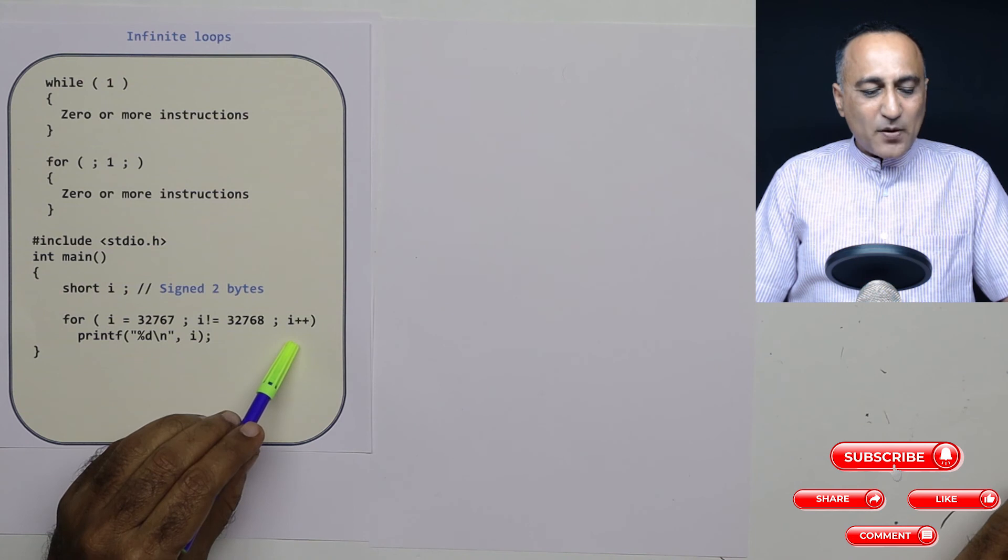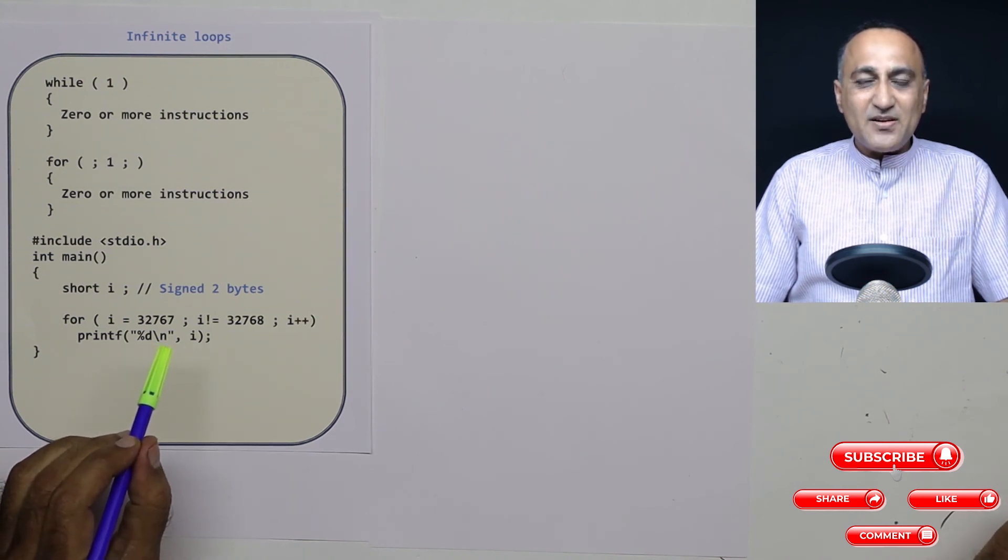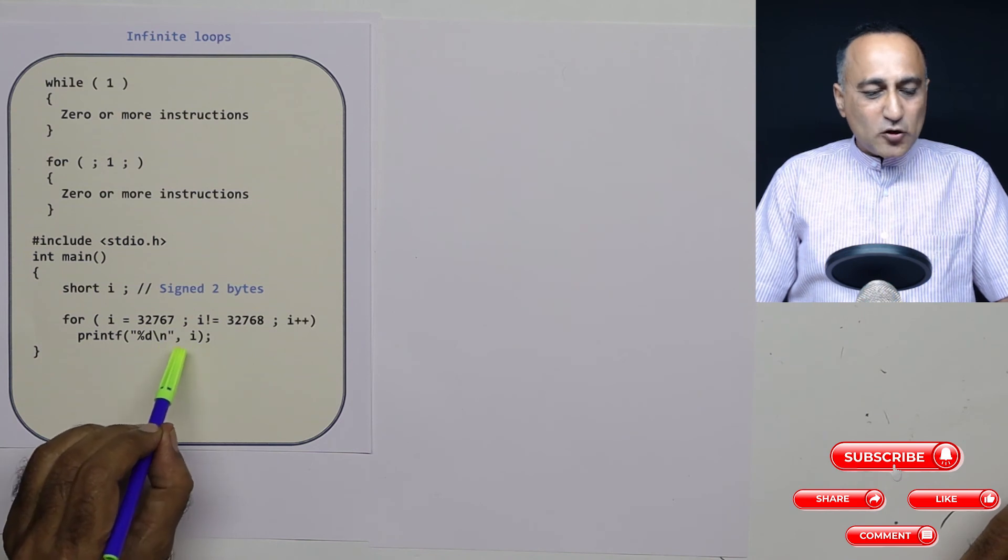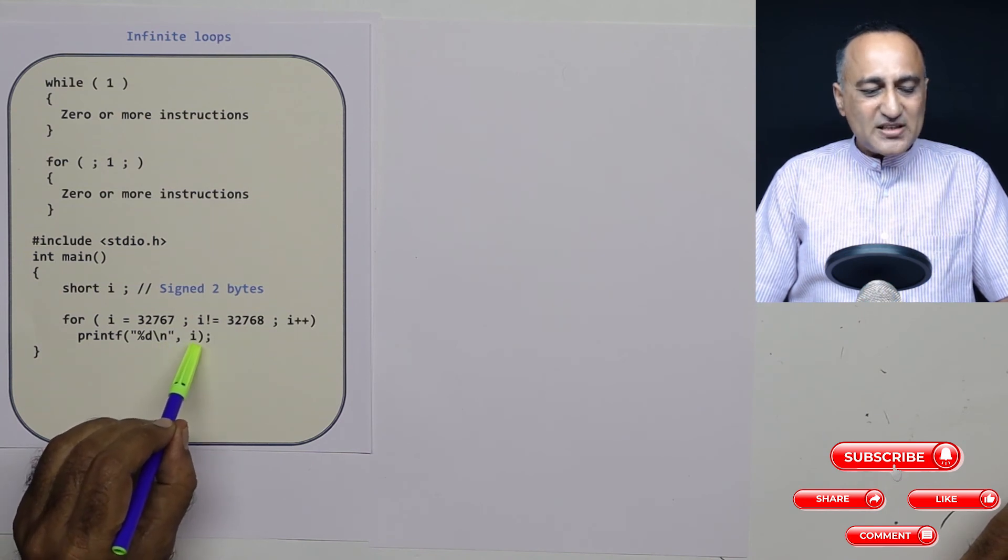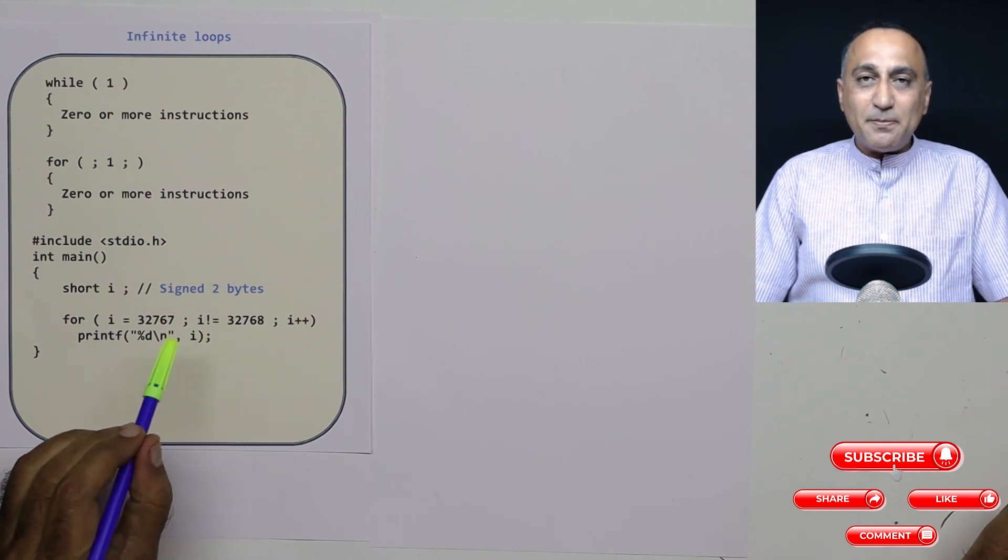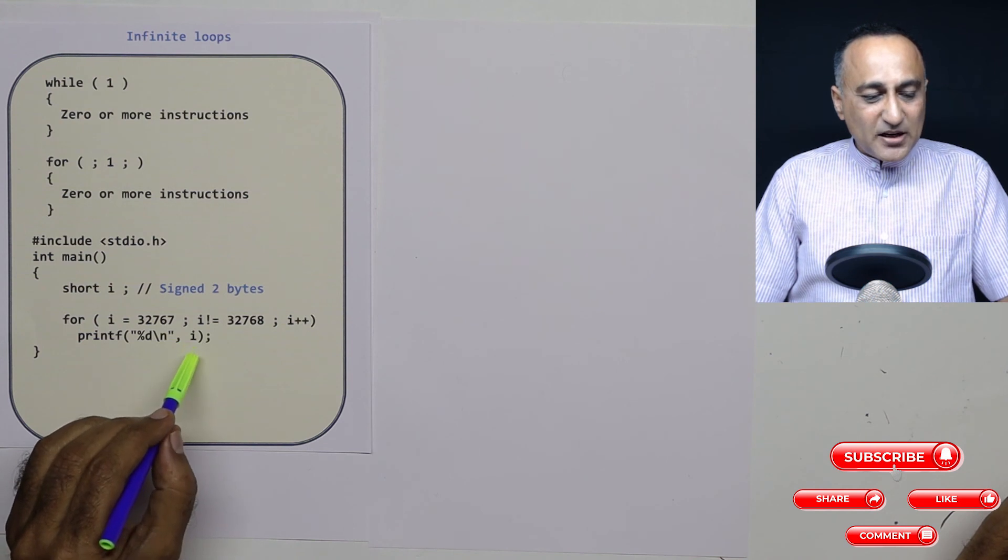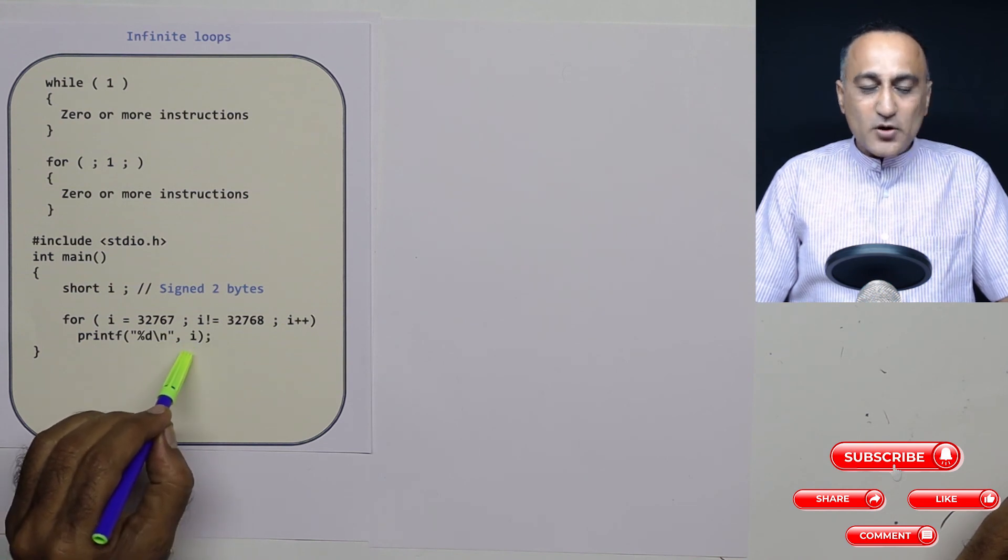Then when I increase it by one, it is going to be minus 32,767. So it is going to print minus 32,767. Then again it comes here. Again it becomes minus 32,766. This particular process will continue till zero is printed.